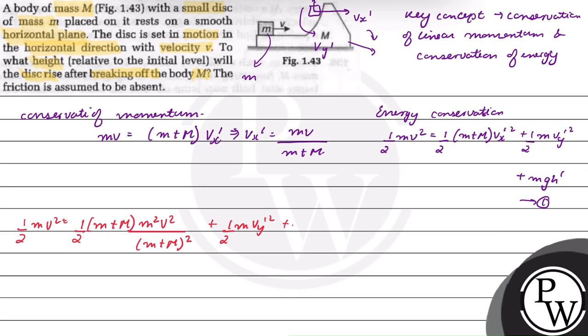plus mgh'. So (vy-dash)² will be equal to v² minus mv²/(m+M) minus 2gh'.